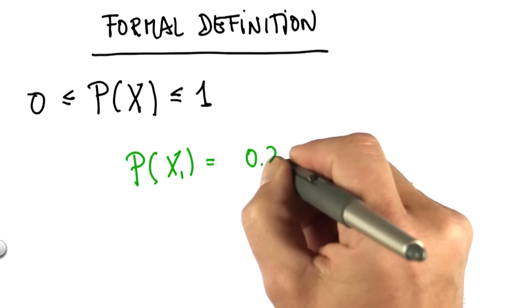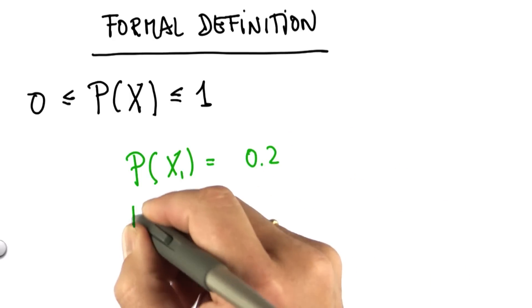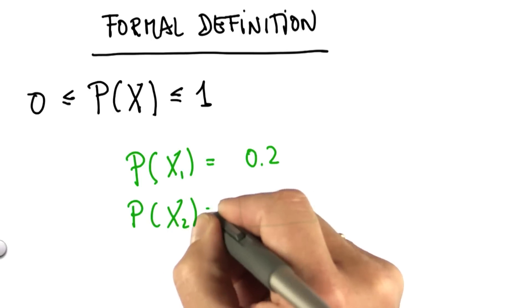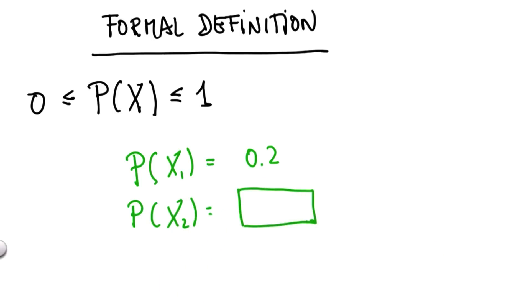If the probability for x1 is 0.2, what would be the probability for x2? Please enter the number as a quiz.